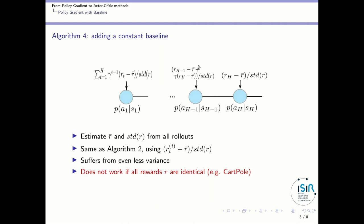So this gives rise to a fourth algorithm, which is very similar to the previous one, but where we just renormalize the reward by subtracting the mean and divide it by the standard deviation on all rollouts. And doing this, as I said, just suffer for even less variance.